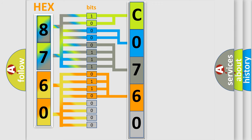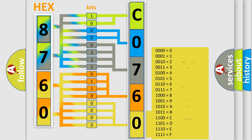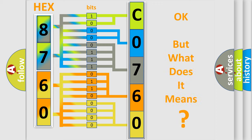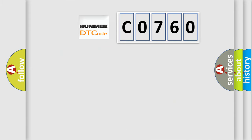A single byte conceals 256 possible combinations. We now know in what way the diagnostic tool translates the received information into a more comprehensible format. The number itself does not make sense to us if we cannot assign meaning to what it actually expresses. So, what does the Diagnostic Trouble Code C0760 interpret specifically for car manufacturers?